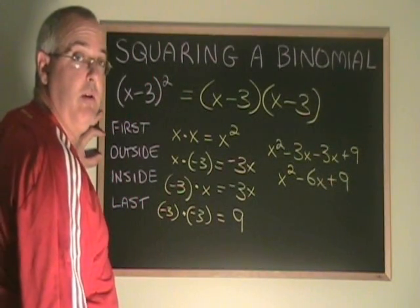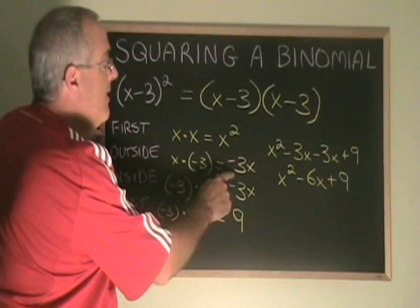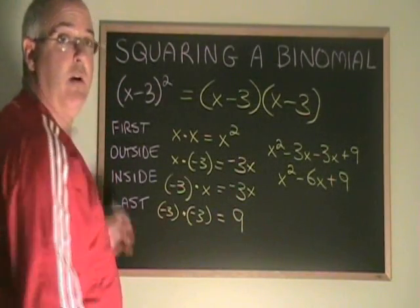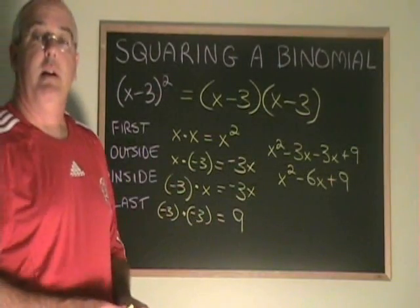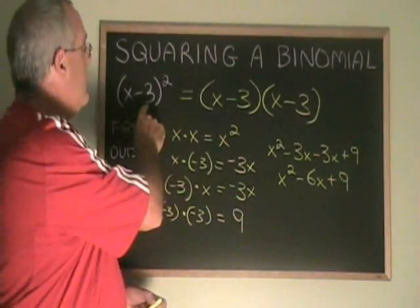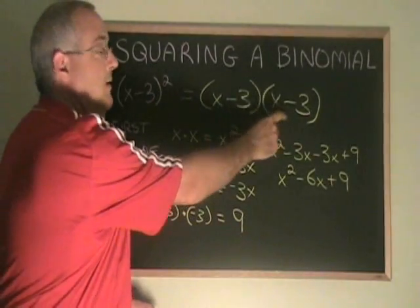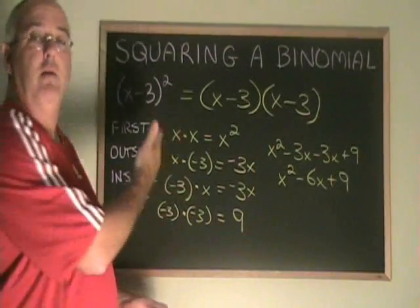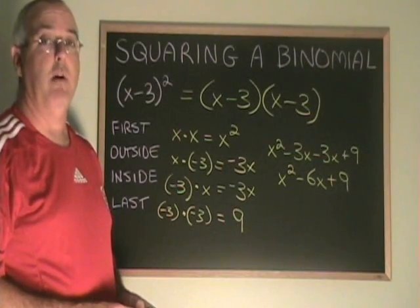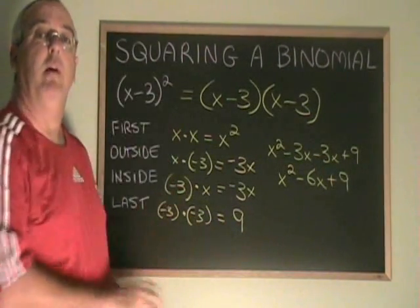Whenever you square a binomial, this will happen. The two middle terms will be identical. Squaring a binomial is the same as multiplying two binomials. All you have to do is rewrite the expression so that it looks like two binomials multiplied and then do the FOIL. This is not the only way of squaring a binomial, but it is one way that works.